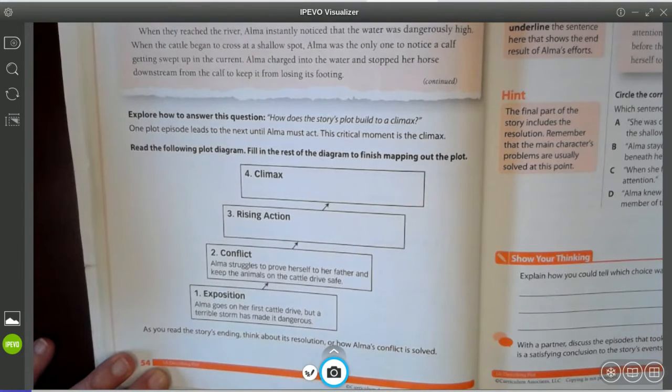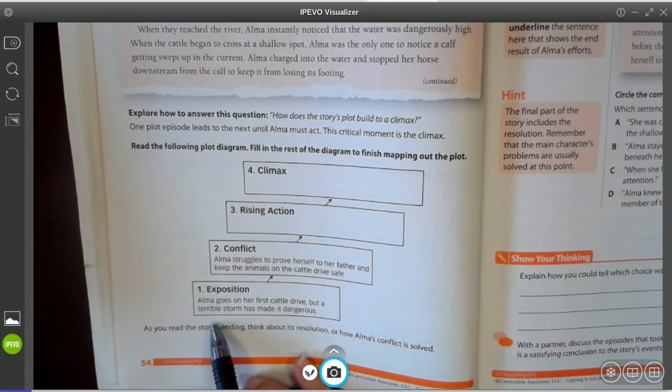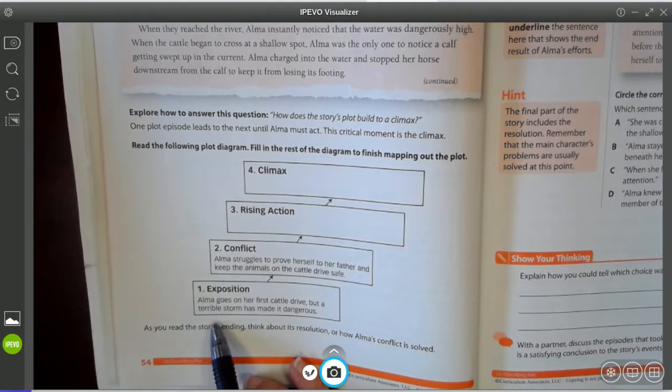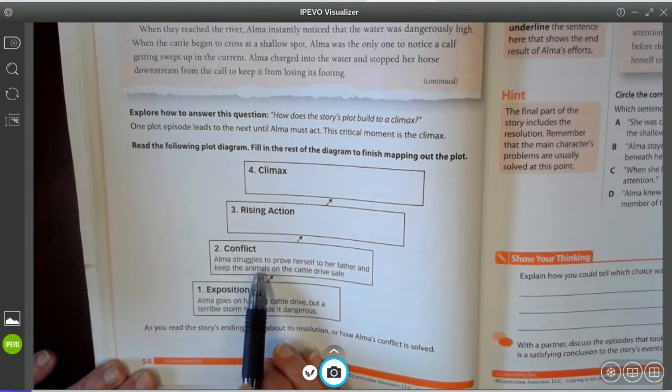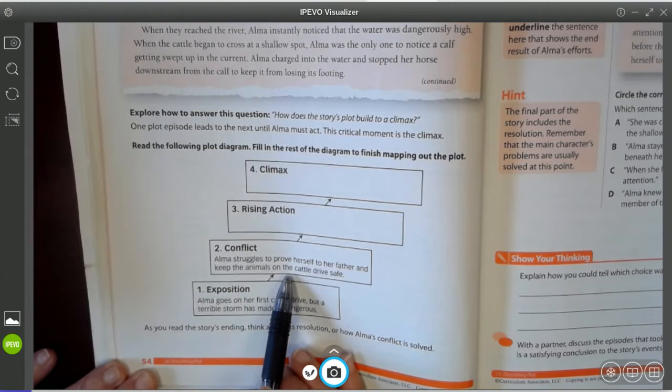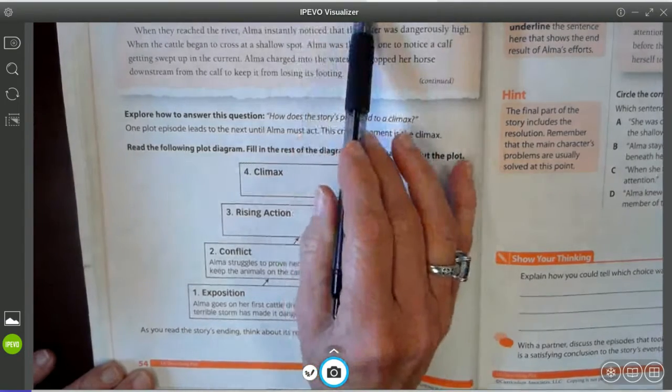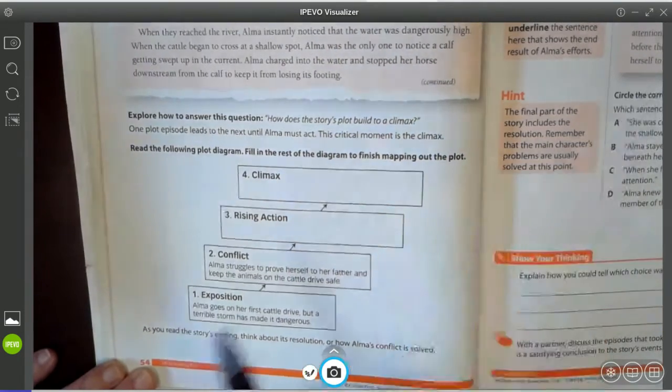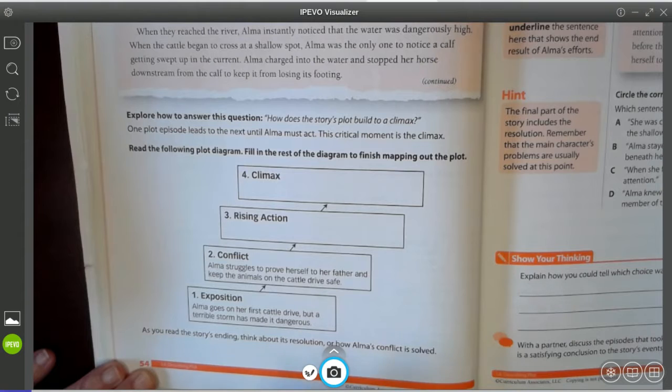So she's the character and she's on this first cattle drive. This is the setting and the setting also means what's going on around the place. And that's a terrible storm. So that moves us into the conflict. The conflict is that Alma struggles to prove herself to her father and keep the animals on the cattle drive safe. So here it told us that she had always wanted to go on this cattle drive, but he wouldn't let her. He said she wasn't ready. So the main problem here is that Alma wants to prove herself to her dad that she can do this.